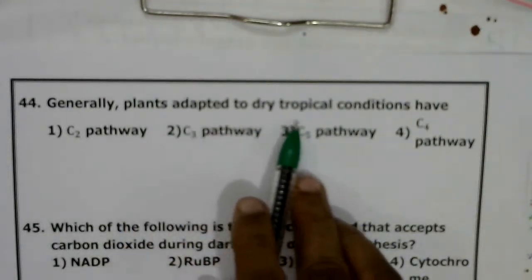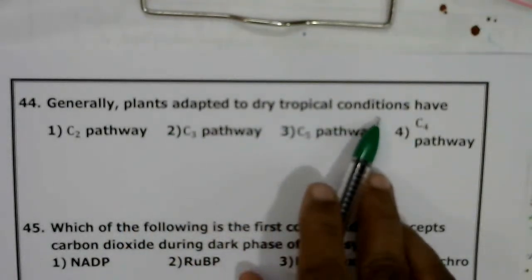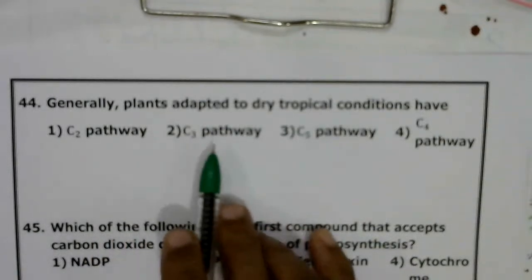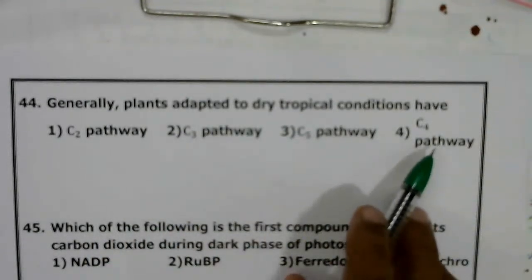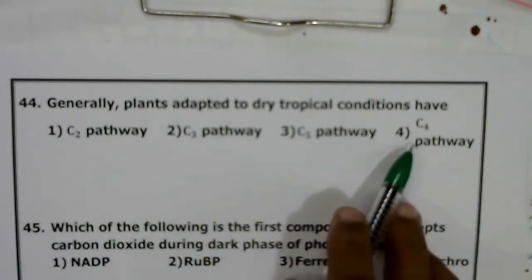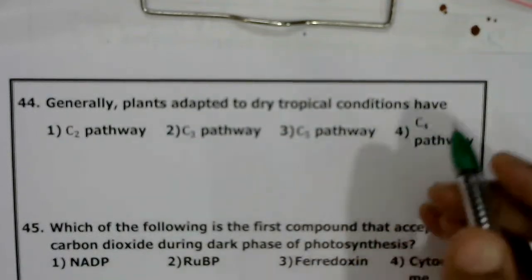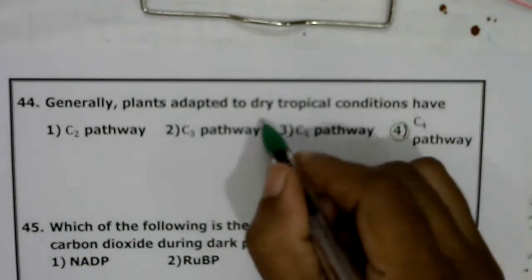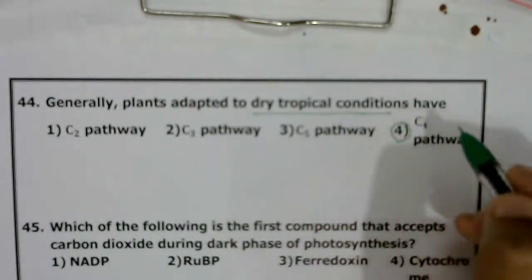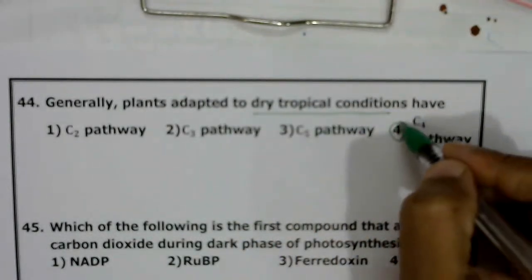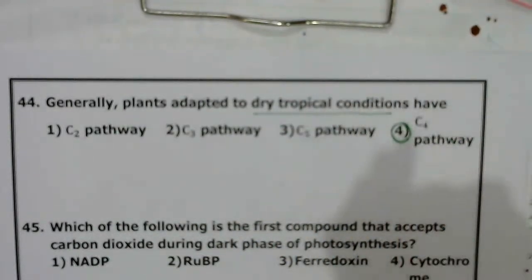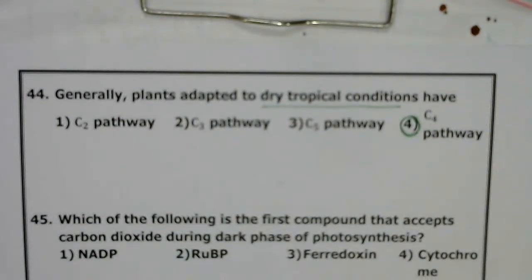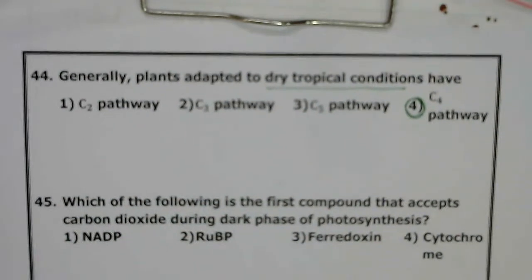Plants adapted to dry tropical conditions have the C2, C3, C4, or C5 pathway? Plants found in dry tropical conditions show the C4 pathway because they are photosynthetically more efficient than C3 plants. Correct answer: C4 pathway.